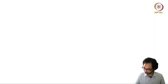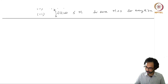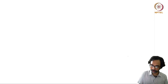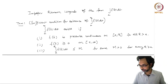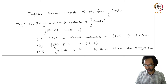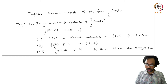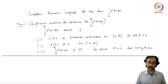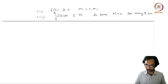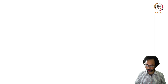If these three conditions are met, then we can rest assured that our improper integral from a to infinity of f(t) dt will exist. This is one sufficient condition.